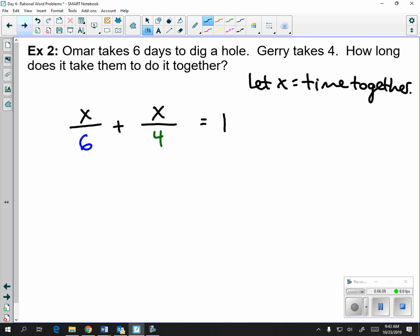So try solving this problem on your own. And you know you're correct if you get an answer of 12 over 5, which is 2.4 days.